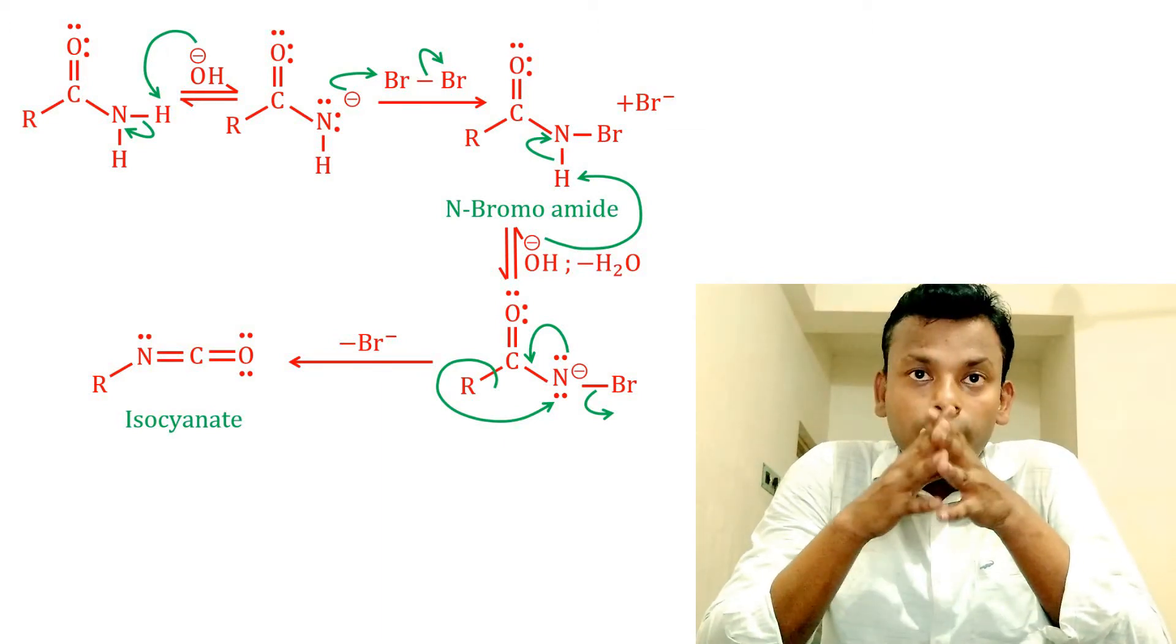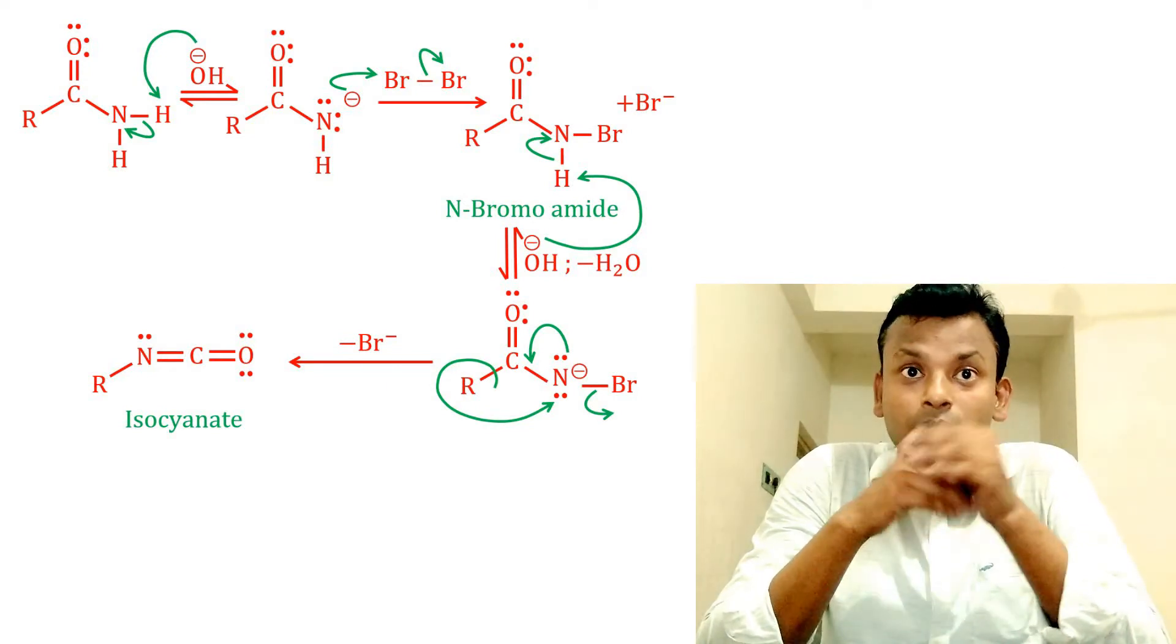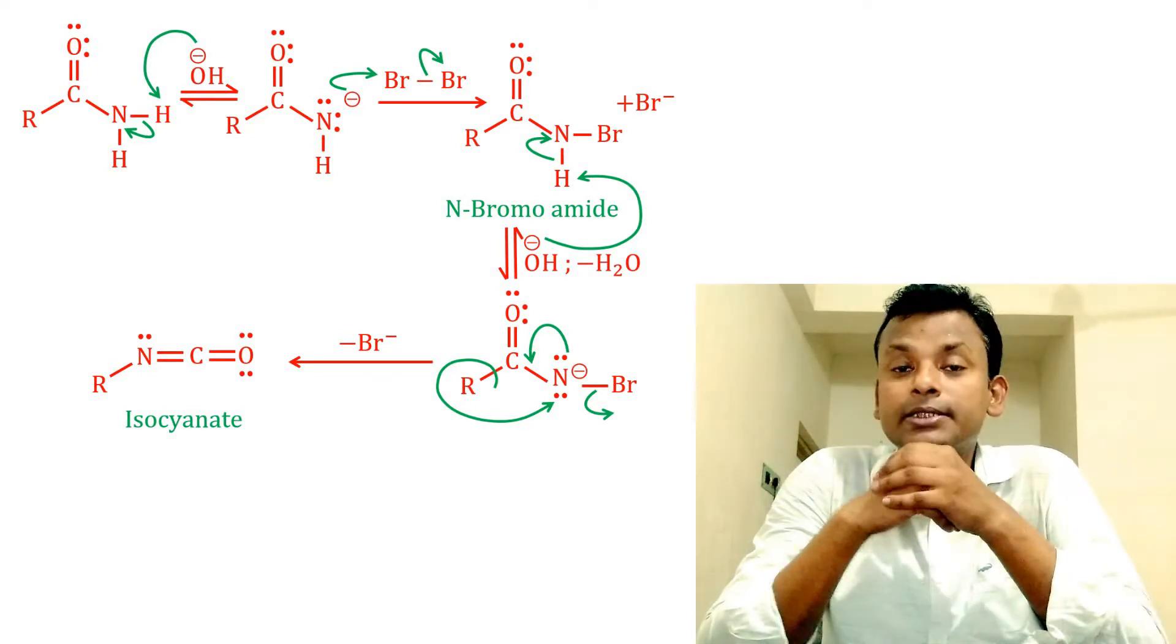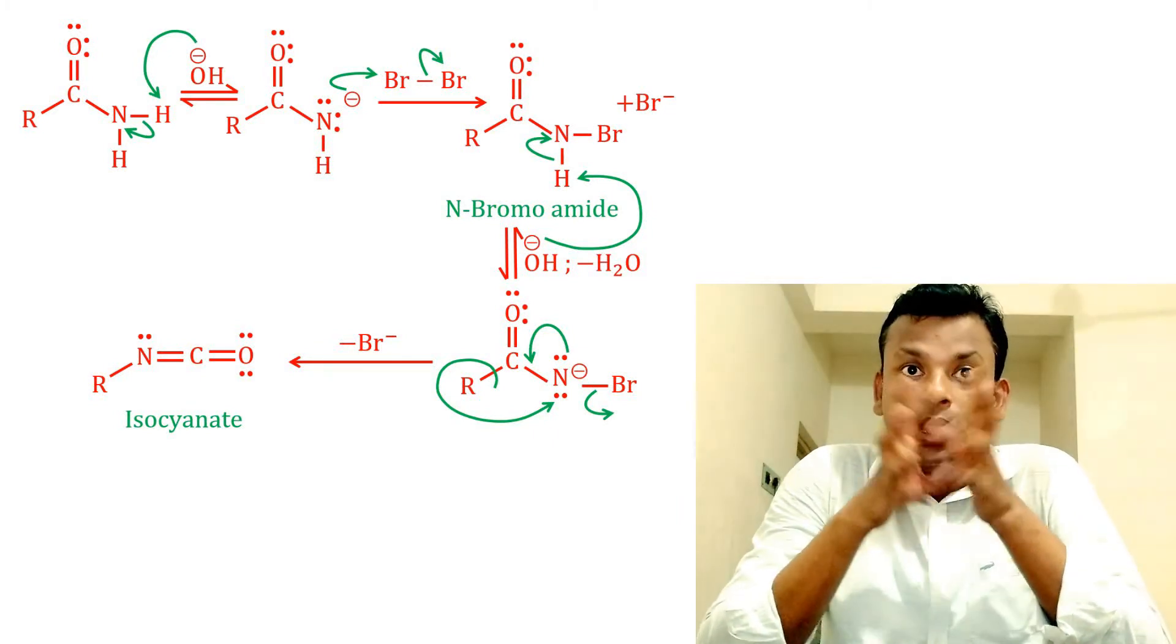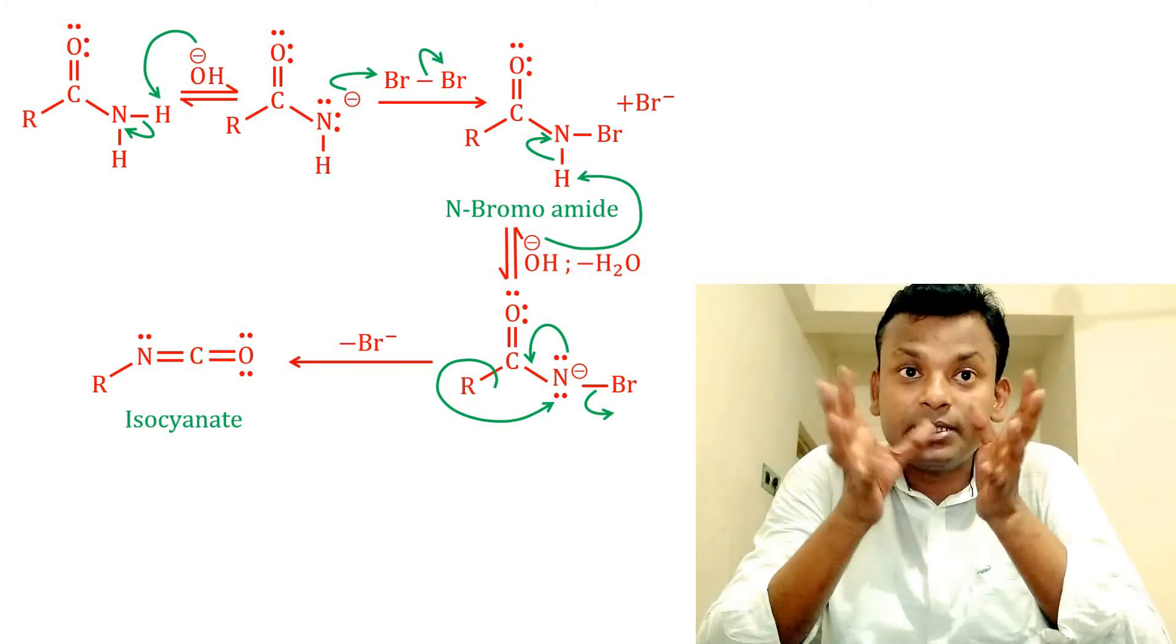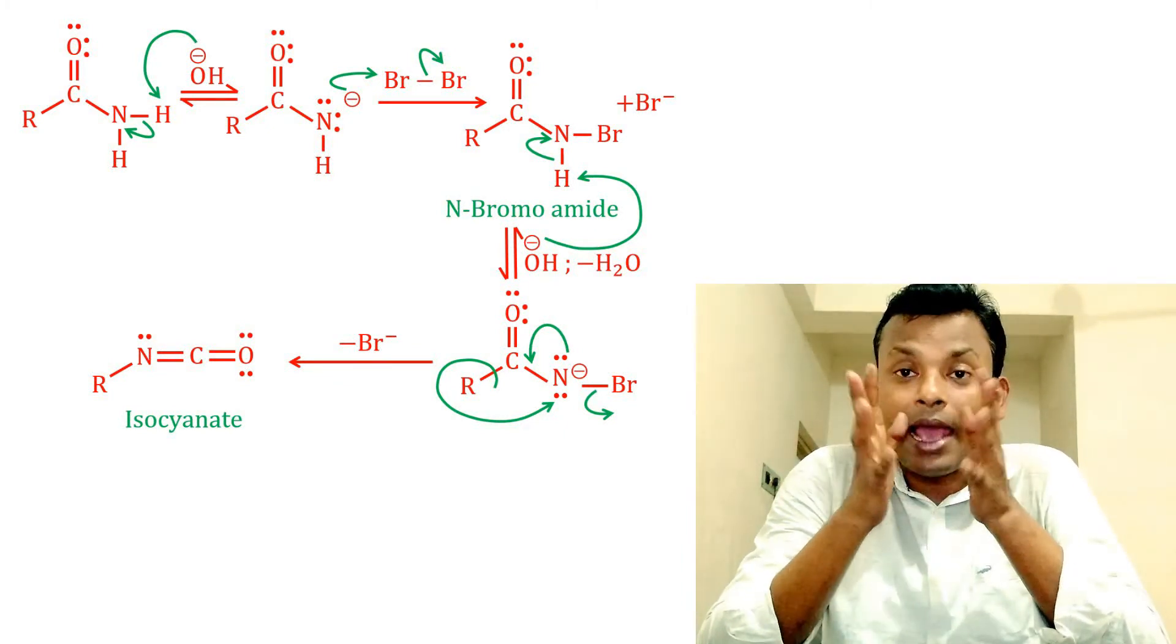The R group migrates with its electrons from the acyl carbon to the nitrogen atom. At the same time, the bromide ion departs and the isocyanate occurs. The mixture is quickly hydrolyzed by aqueous base.